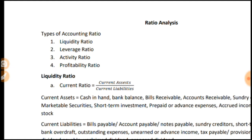We have four types of accounting ratios: liquidity ratios, leverage ratios, activity ratios, and profitability ratios.